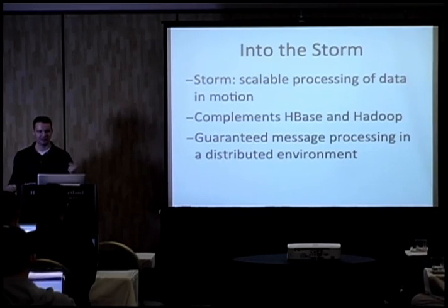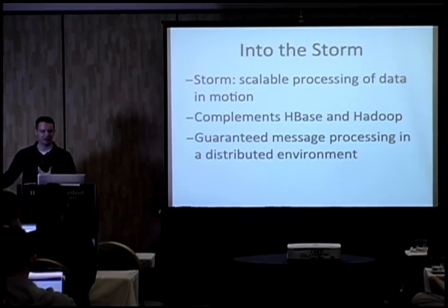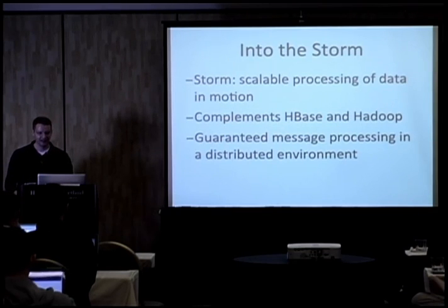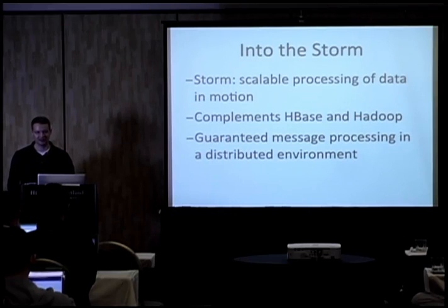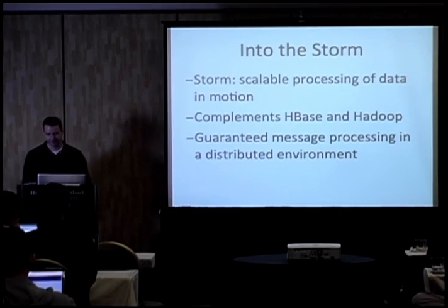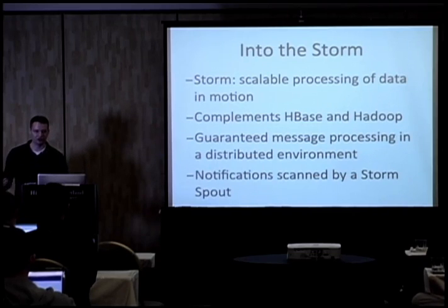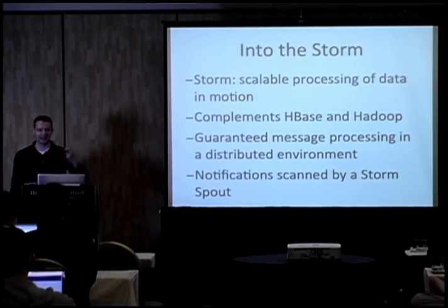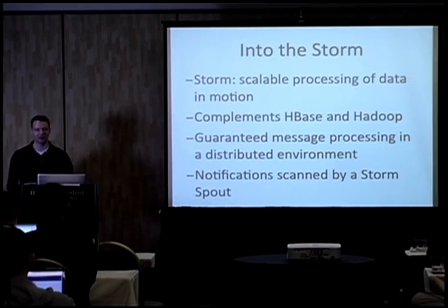Once a message enters Storm, it can process through a topology of processing nodes and be admitted to some output. Storm makes strong guarantees that either the message will be processed, or if there's a failure, it can go and ask the data source to give it again so it can be processed later. A lot of alternative complex event processing systems don't have these kinds of strong guarantees. We looked at S4 and a couple of other CEP and proprietary systems, and Storm was the only system I'm aware of that provides these guarantees. We integrated with Storm by writing our own Storm spout that scans the notification table described earlier and emits events across the Storm cluster.